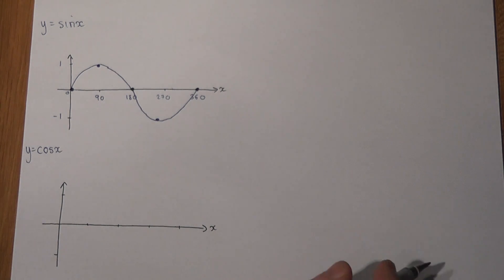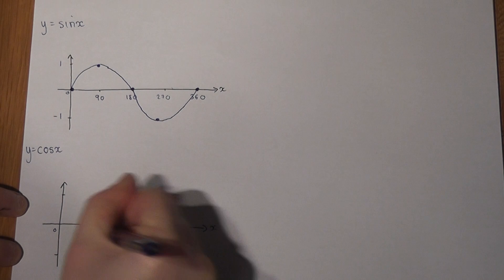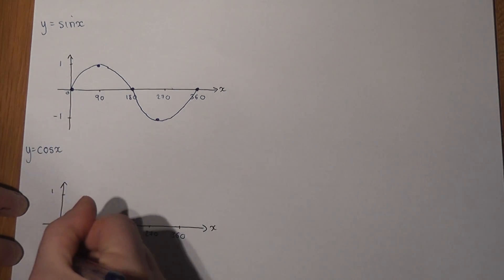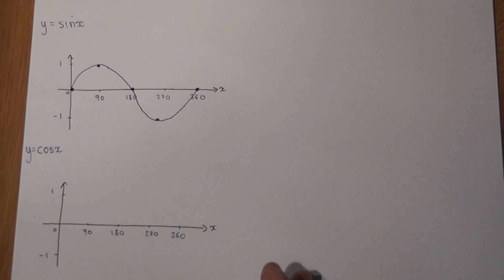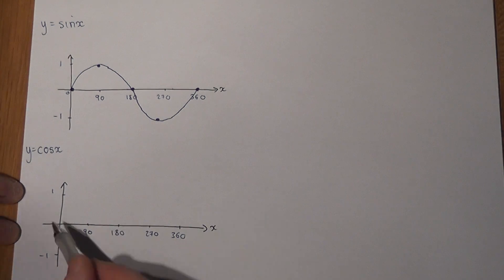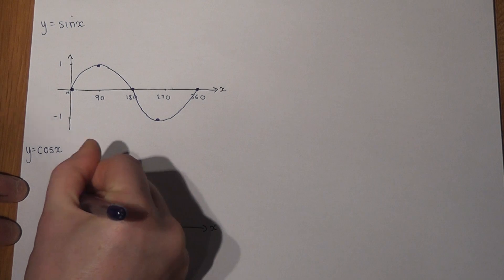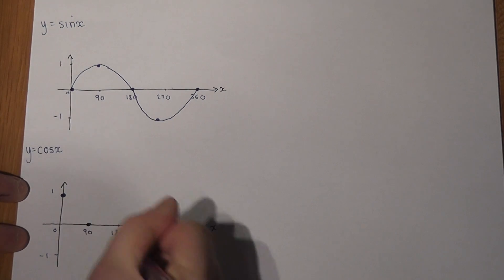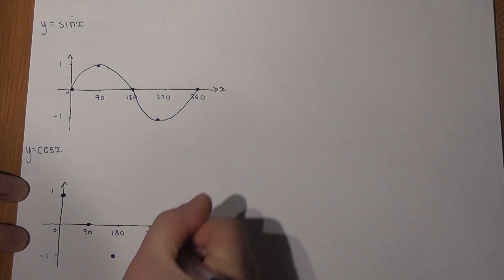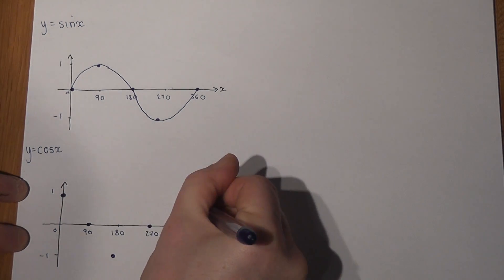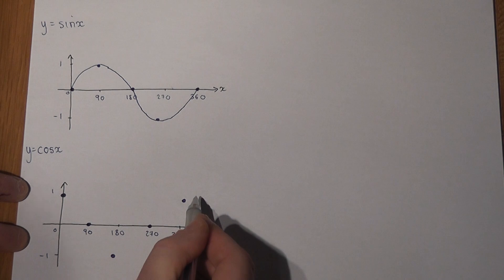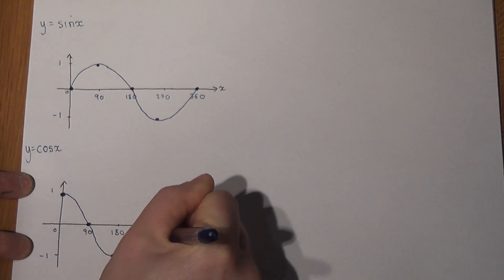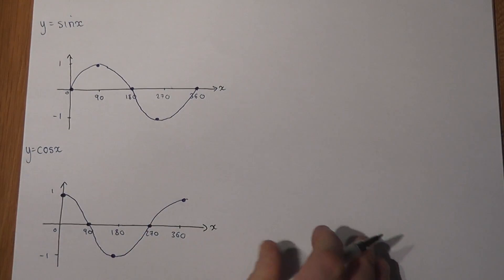Now the cos graph is really similar. It's got the same key values, and again it goes up to 1 and down to minus 1. The only difference is that cos, rather than starting at the origin, it starts at 1. It sort of starts at this point of the graph on sine. It then goes down to 0, then down to minus 1, then back to 0 and back up to plus 1. It's the same shape graph. So it goes like so. And again, only a sketch, just to indicate how cos x looks.